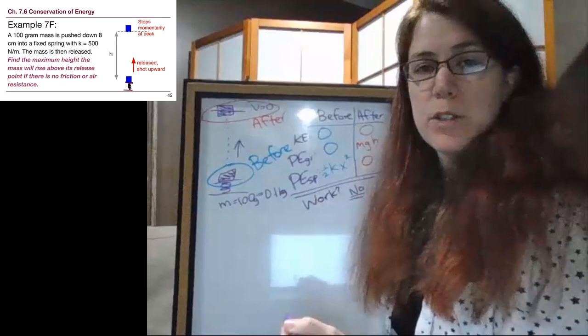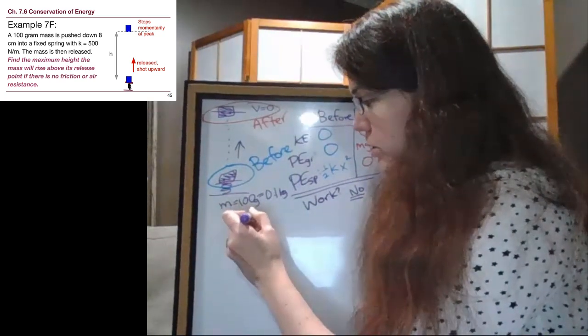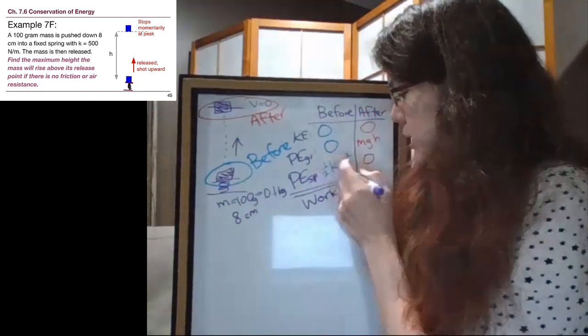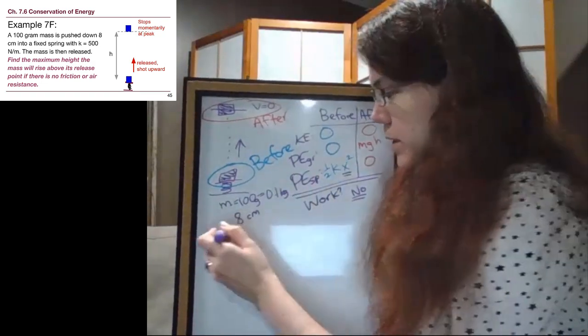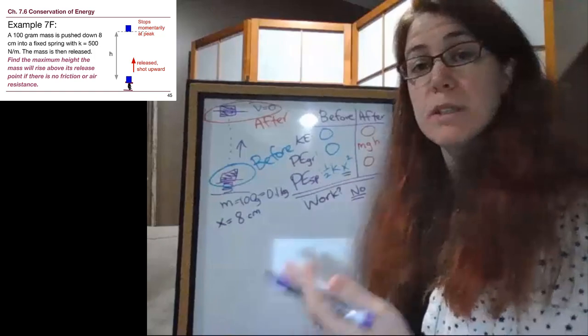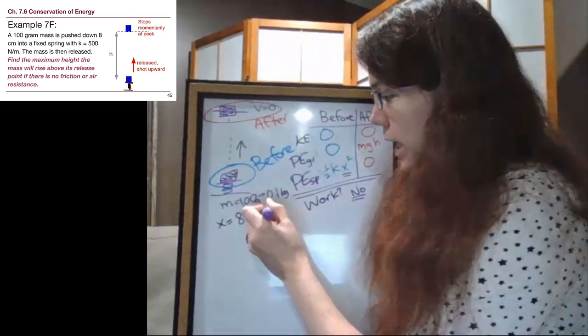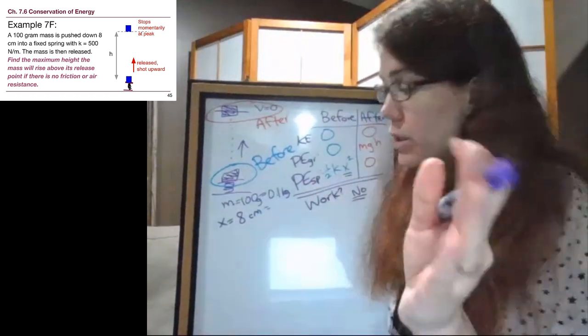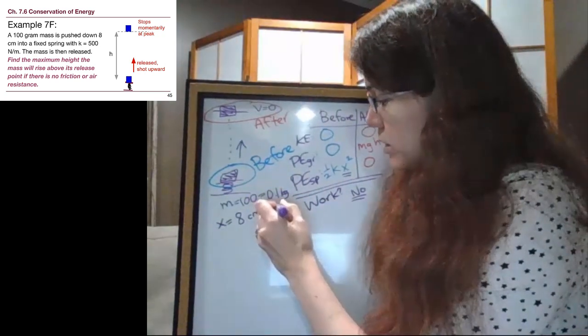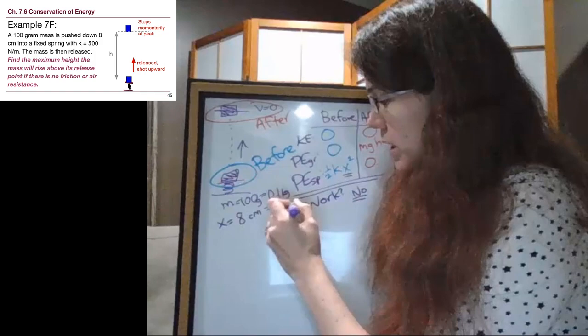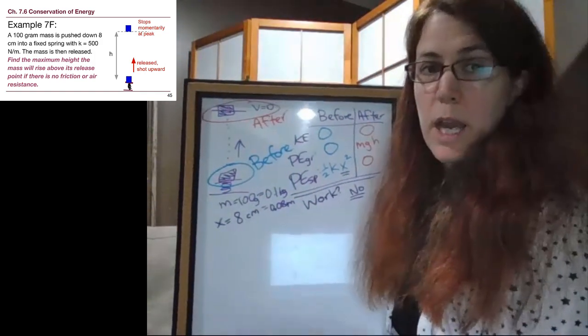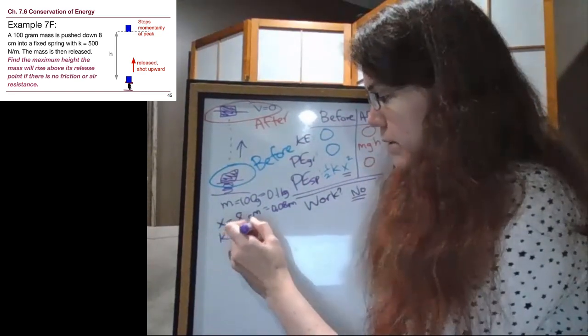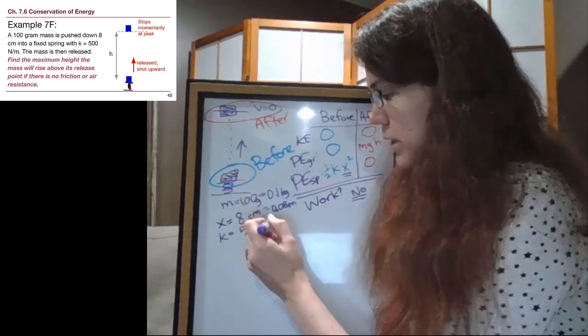The 8 centimeters that we push ourselves into the spring, that 8 centimeters, we need to recognize what that is. We're going to get better at this as we do more spring problems, but that is the compression distance x. So x here is 8 centimeters, but centimeters is not our standard unit. We have to turn that into meters. There are 100 centimeters in one meter. You can make sure and do the full unit conversion on your page if you need to, but we get 0.08 meters for this. And then the spring constant k, we'll just write down since we're making a list anyway, is 500 newtons per meter. And those are standard units for us.